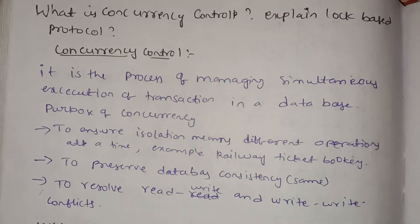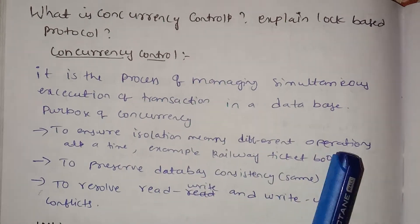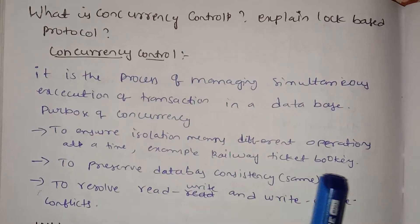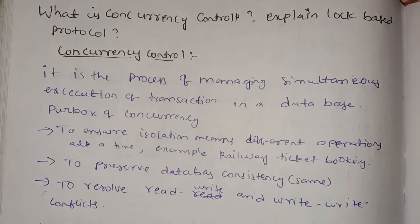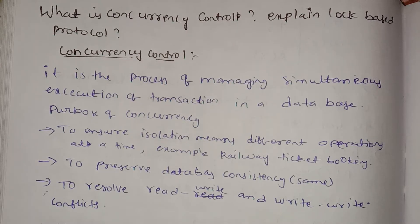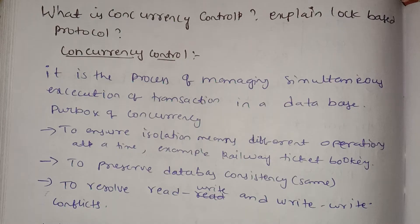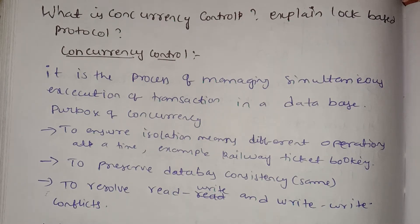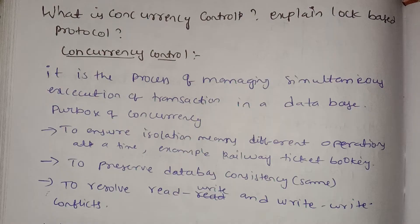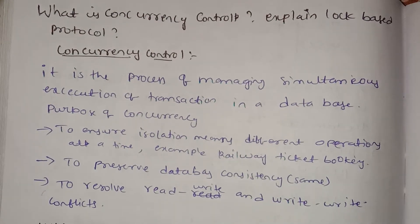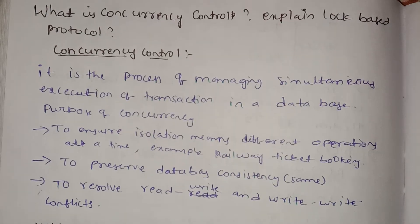Concurrency control is used to ensure isolation — different operations at the same time. Example: railway tickets. Isolation means different operations occurring at the same time. In the database, we have operations like insert, update, and delete. Once all operations are complete — insert or delete — if there is any update by multiple operations, only one operation proceeds.